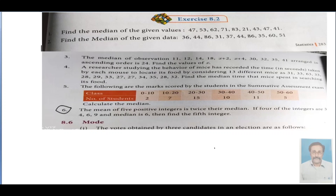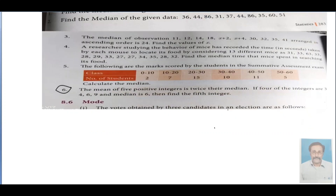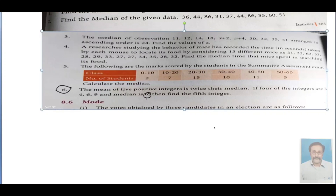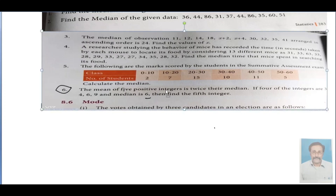We need to find the 5th integer. If 5 times the median is 6, the median is 6. If the median is 2 times the value, we will use the median 5 times to do this.